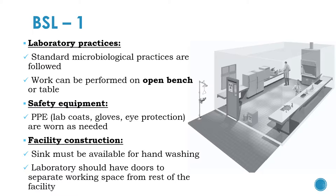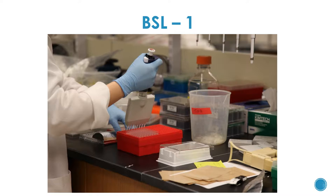Biosafety level 1: the microbes here are not known to cause disease in healthy adults and present minimal potential hazard to laboratorians and the environment. An example is a non-pathogenic strain of E. coli. Standard microbiological practices are followed and work can be performed on an open bench or table. Safety equipment includes personal protective equipment like lab coats, gloves and eye protection worn as needed. The facility must have a sink for hand washing and doors to separate the working space from the rest of the facility.